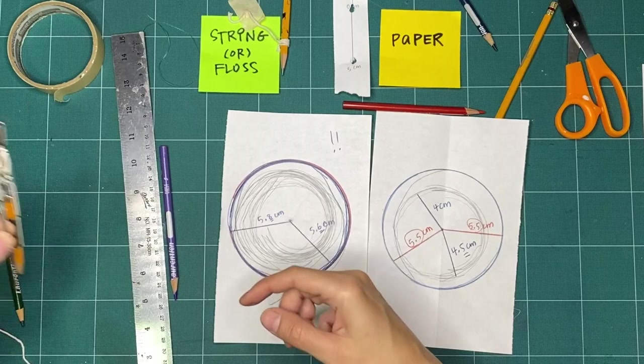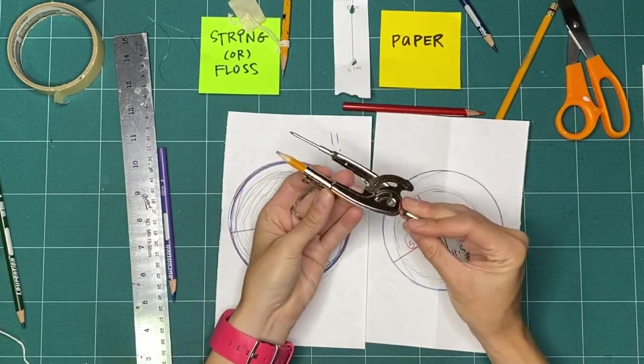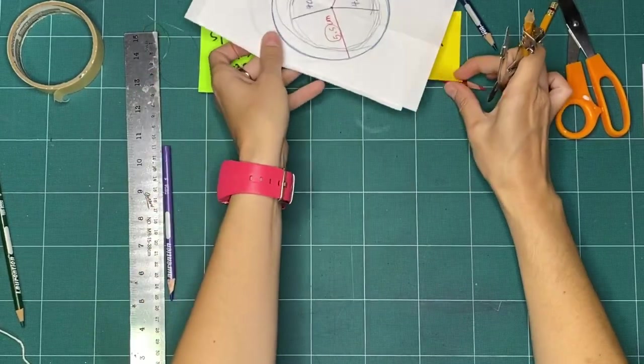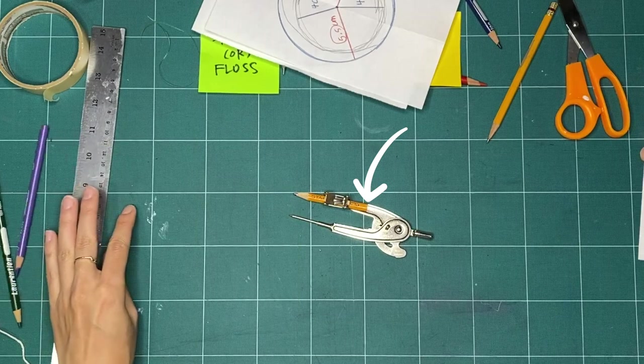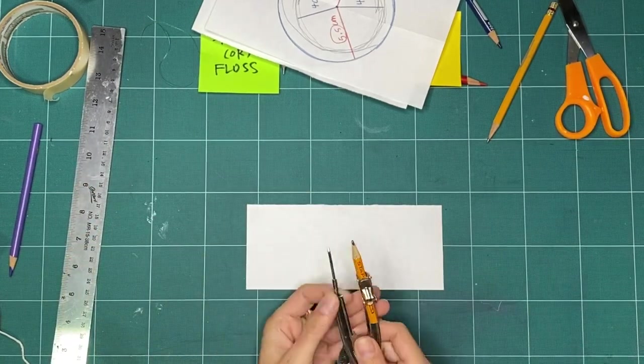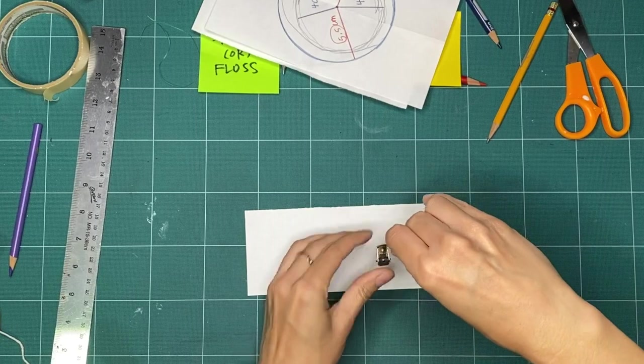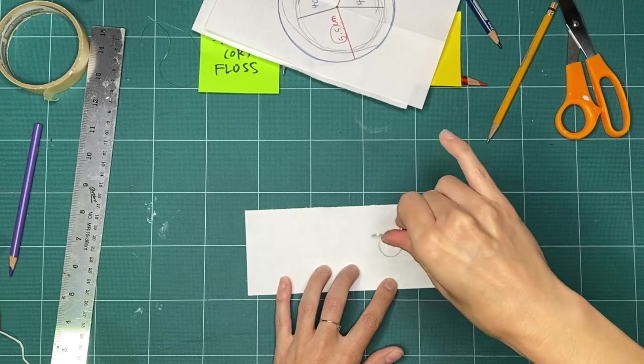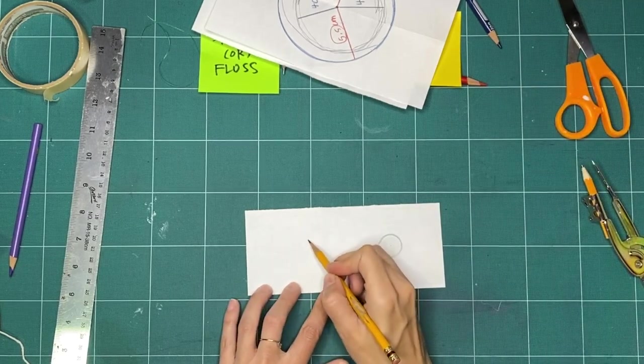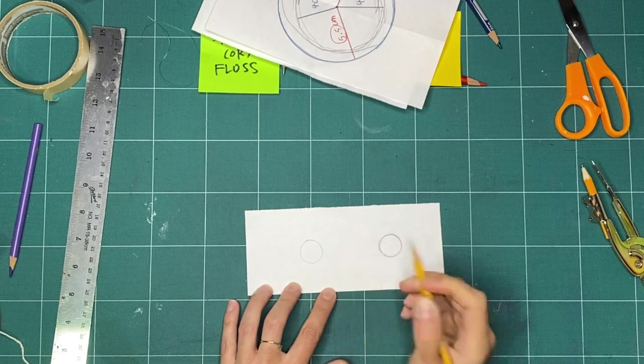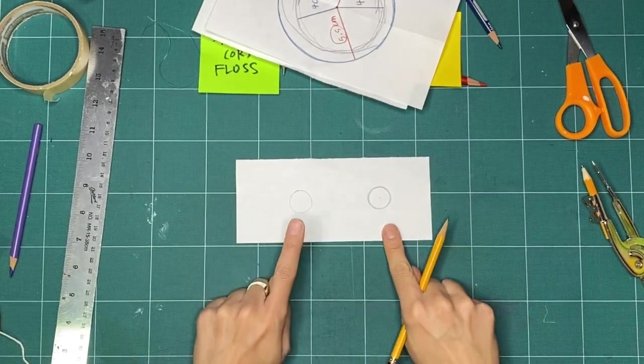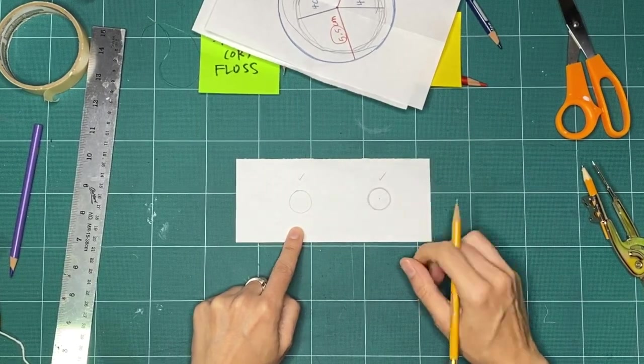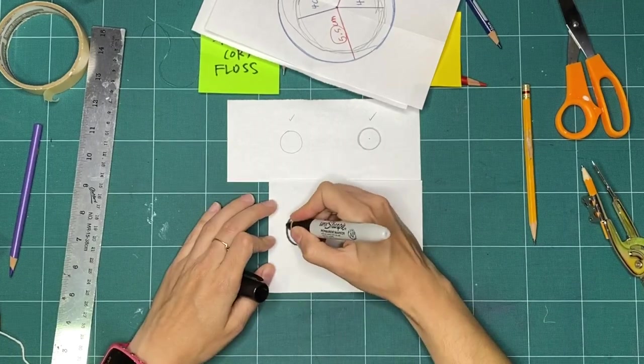Making perfect circles takes practice, even when we're using tools and tricks like this, or even when we're using a tool called a compass. A compass is a mechanical tool that helps us make a perfect circle. What makes this circle perfect? And this one not perfect? Is one circle better than the other? When we're making art and practicing, that's up to you.